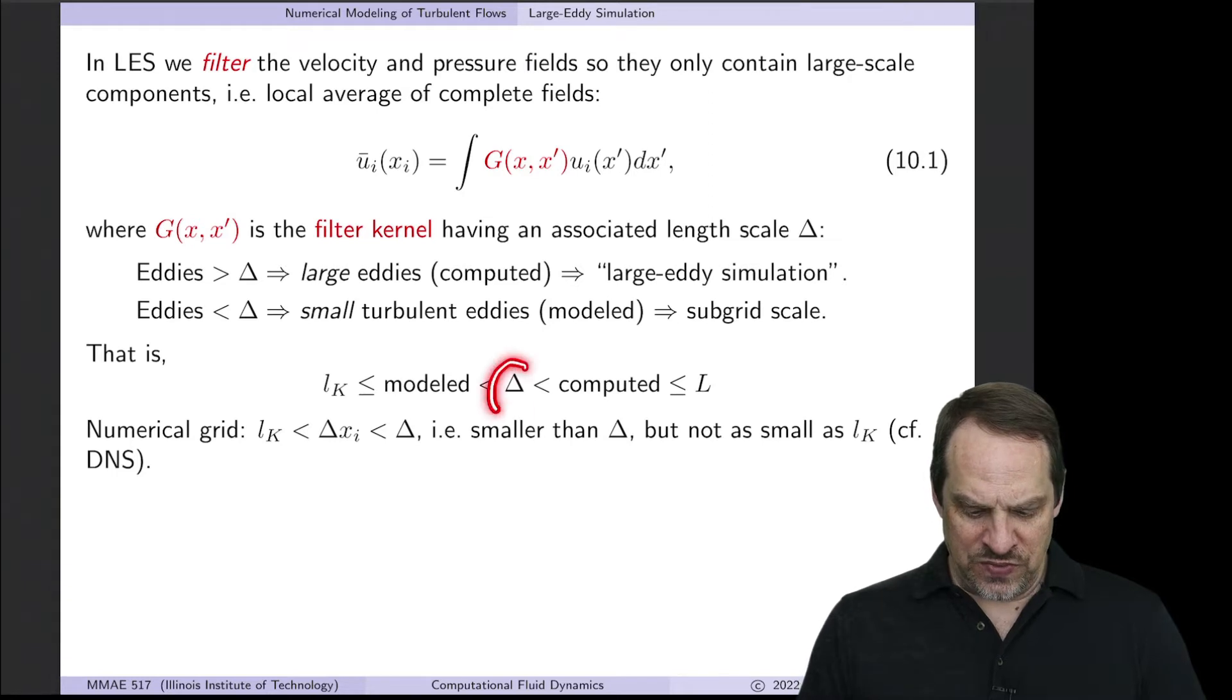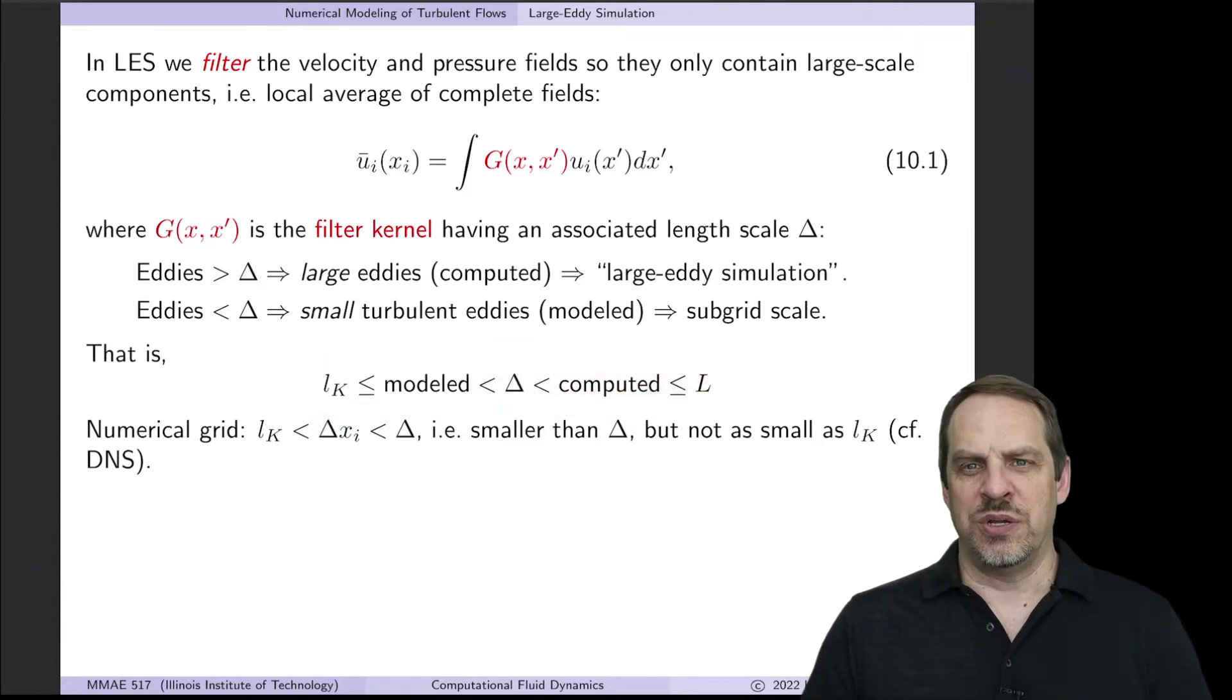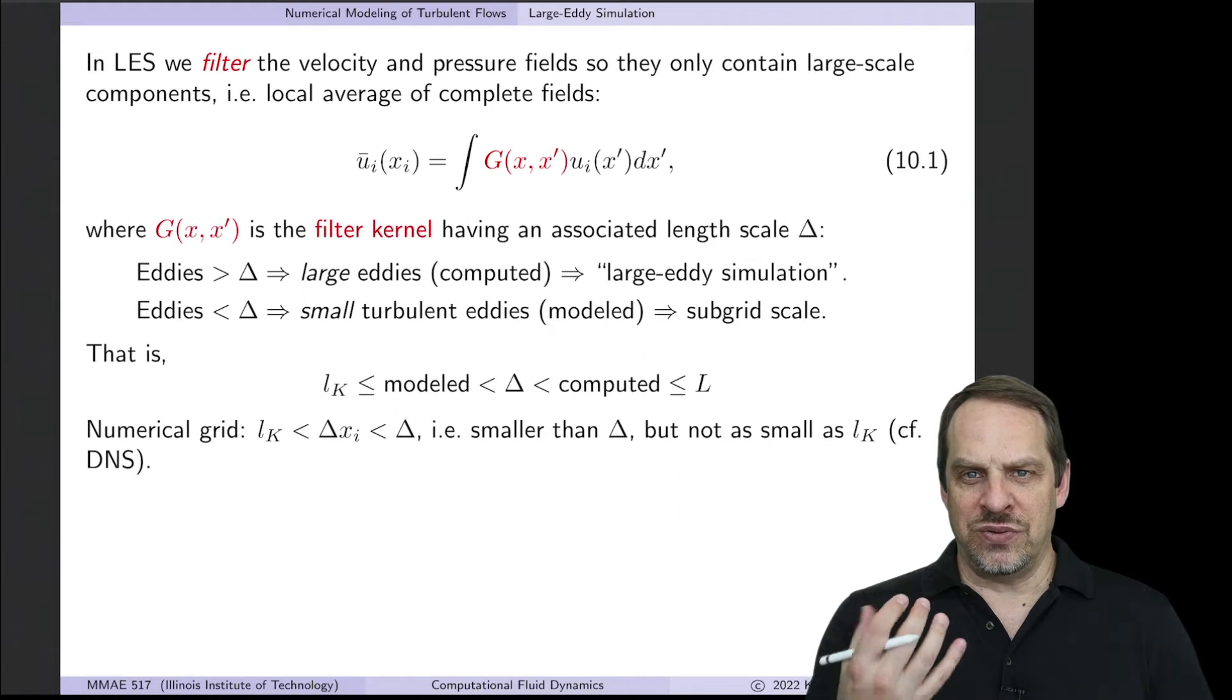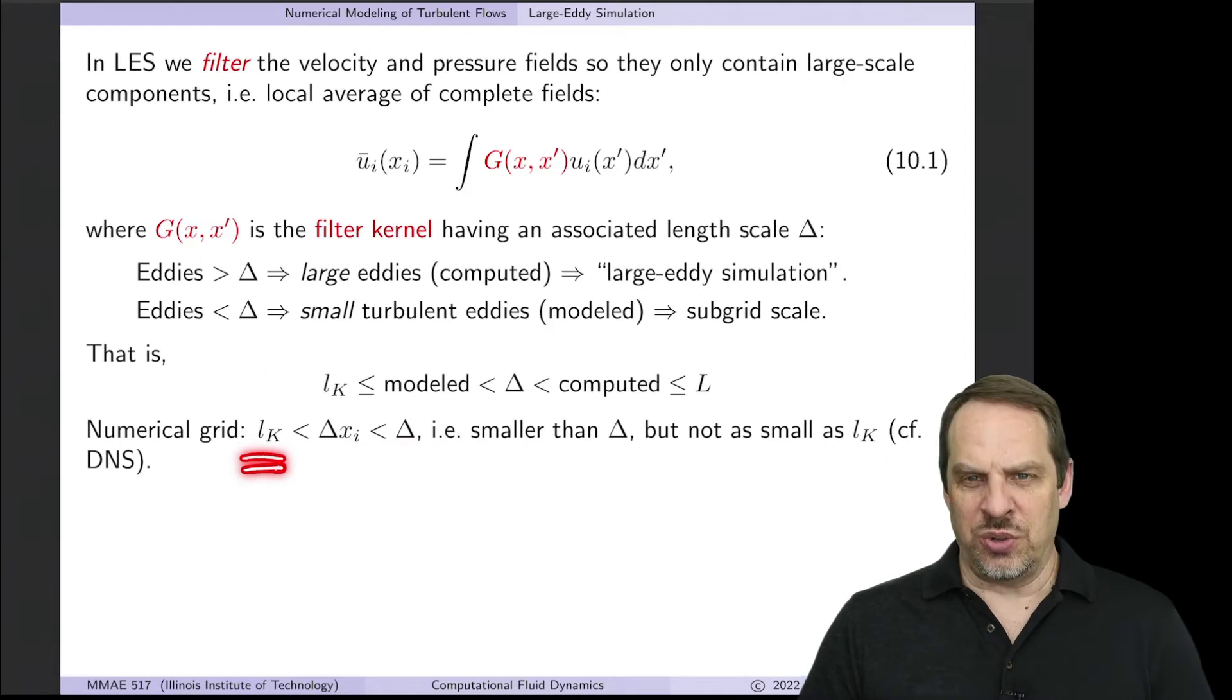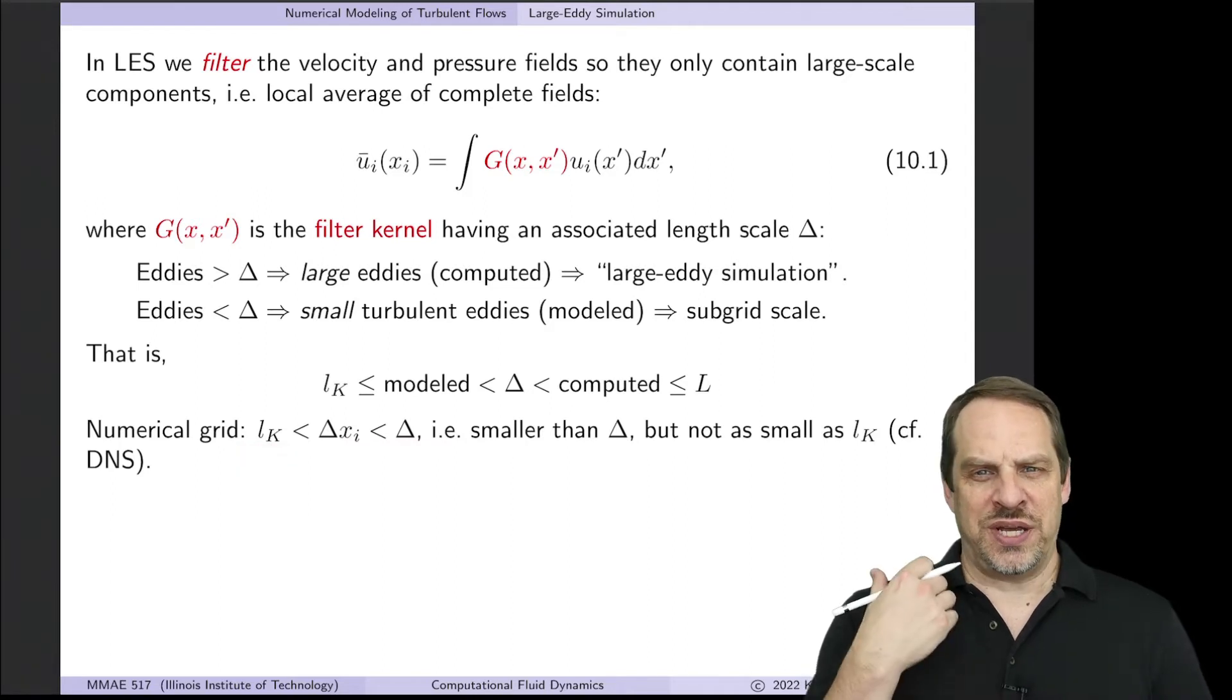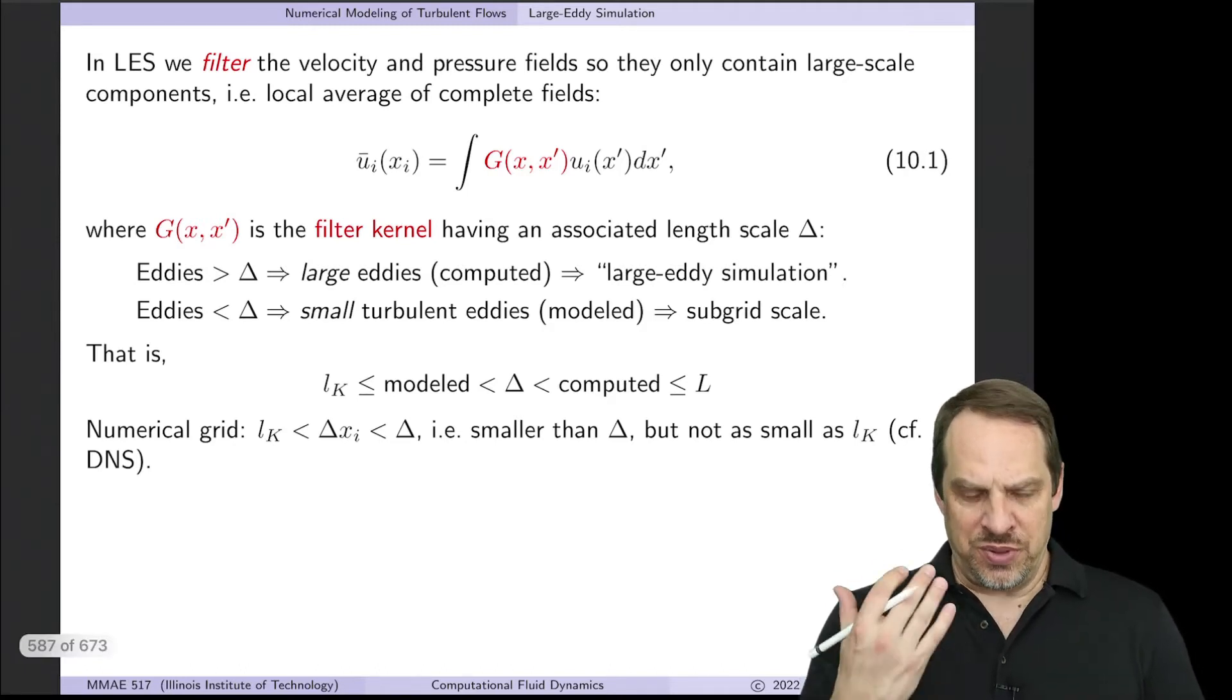With this filter size capital delta, everything larger is computed but everything smaller is modeled. Now the grid sizes Δx, Δy, and Δz need to be smaller than delta rather than the Kolmogorov scale. This buys us extra resolution, reducing the number of grid points needed and speeding up calculations.